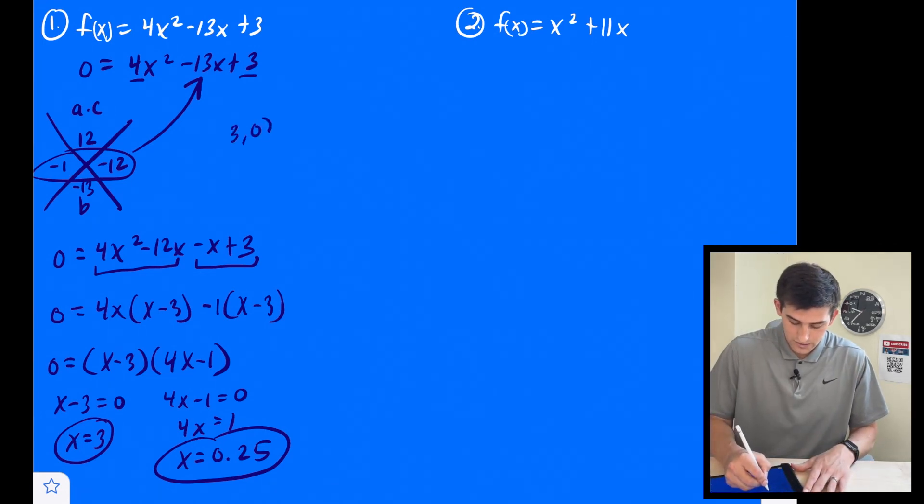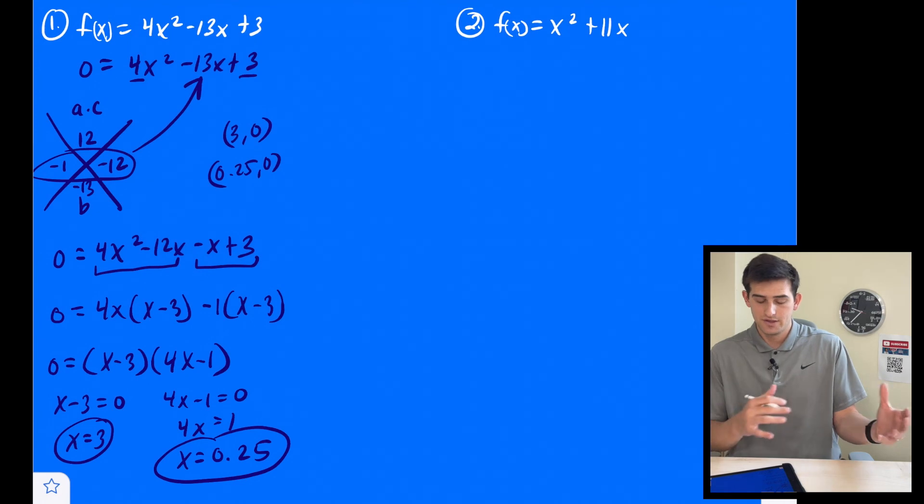So that would be like three comma zero, and 0.25 comma zero. All right, and that's how we can find the two zeros of number one.